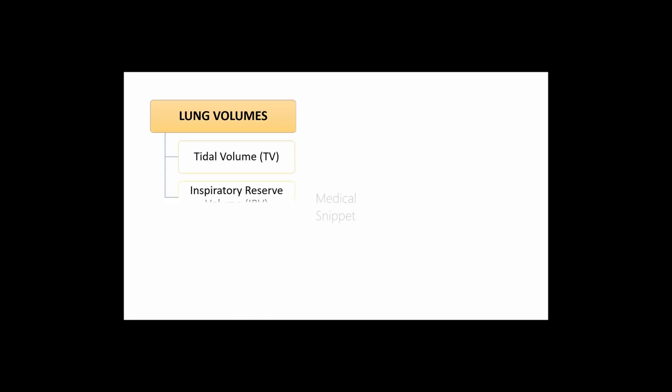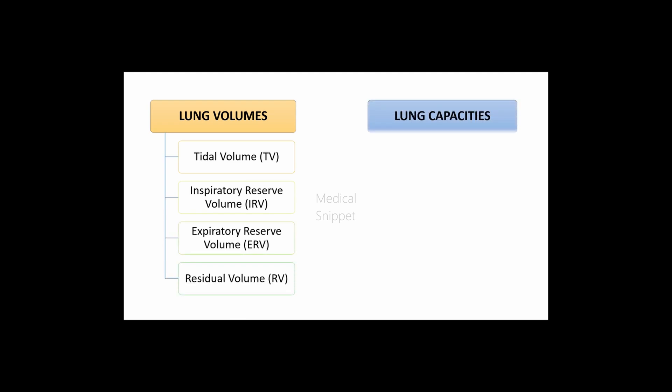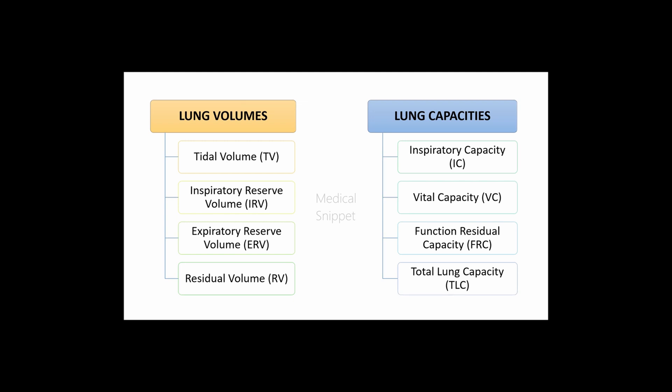In this video we will discuss lung volumes and lung capacities. There are four lung volumes: tidal volume, inspiratory reserve volume, expiratory reserve volume, and residual volume. The four lung capacities are inspiratory capacity, vital capacity, functional residual capacity, and total lung capacity. We will discuss in detail about each volume and capacity.